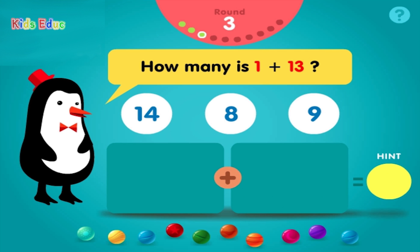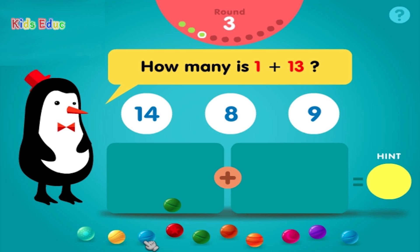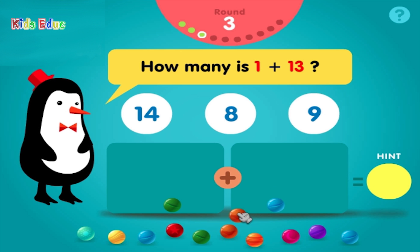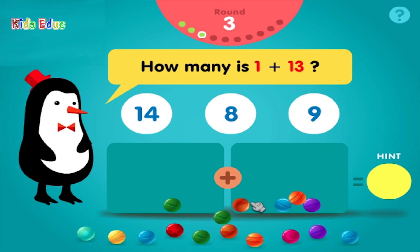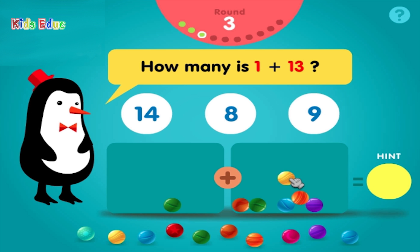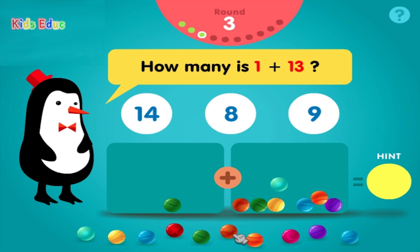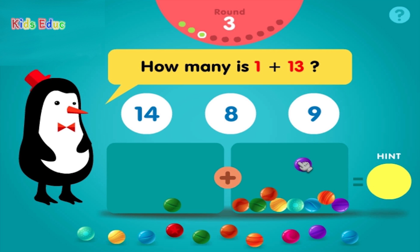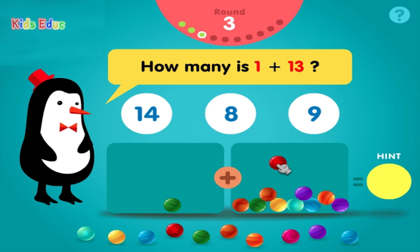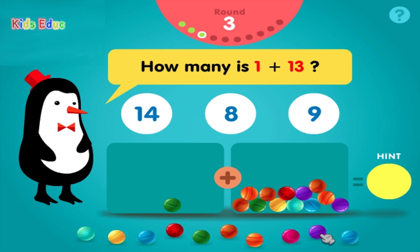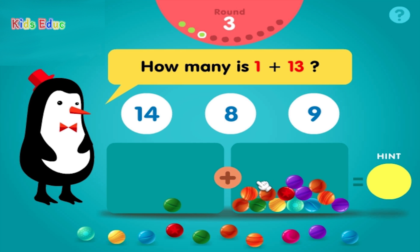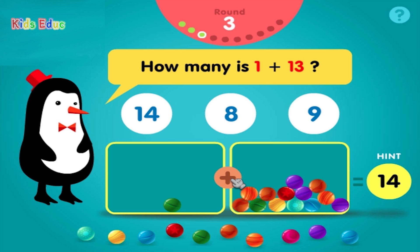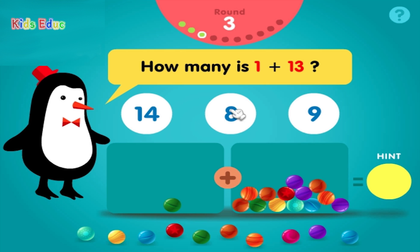How many is 1 plus 13? 1, plus 1, 2, 3, 4, 5, 6, 7, 8, 9, 10, 11, 12, 13, 14, equals 14. Sweet!